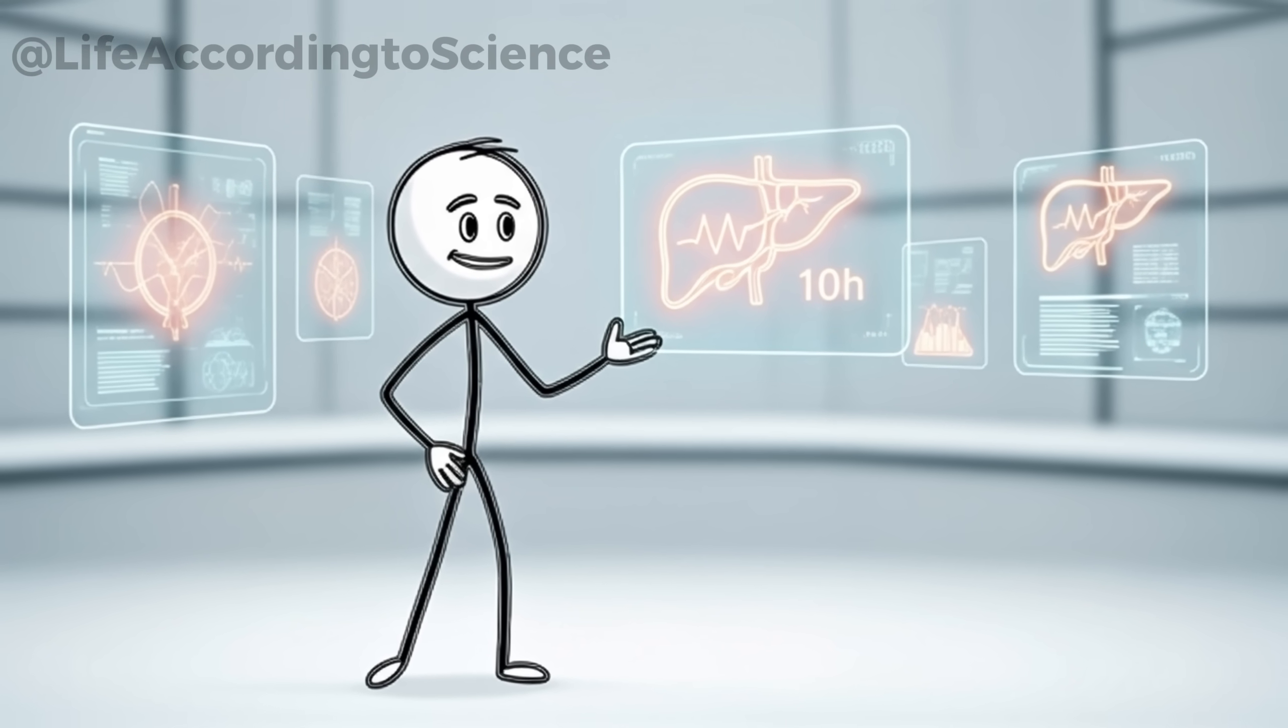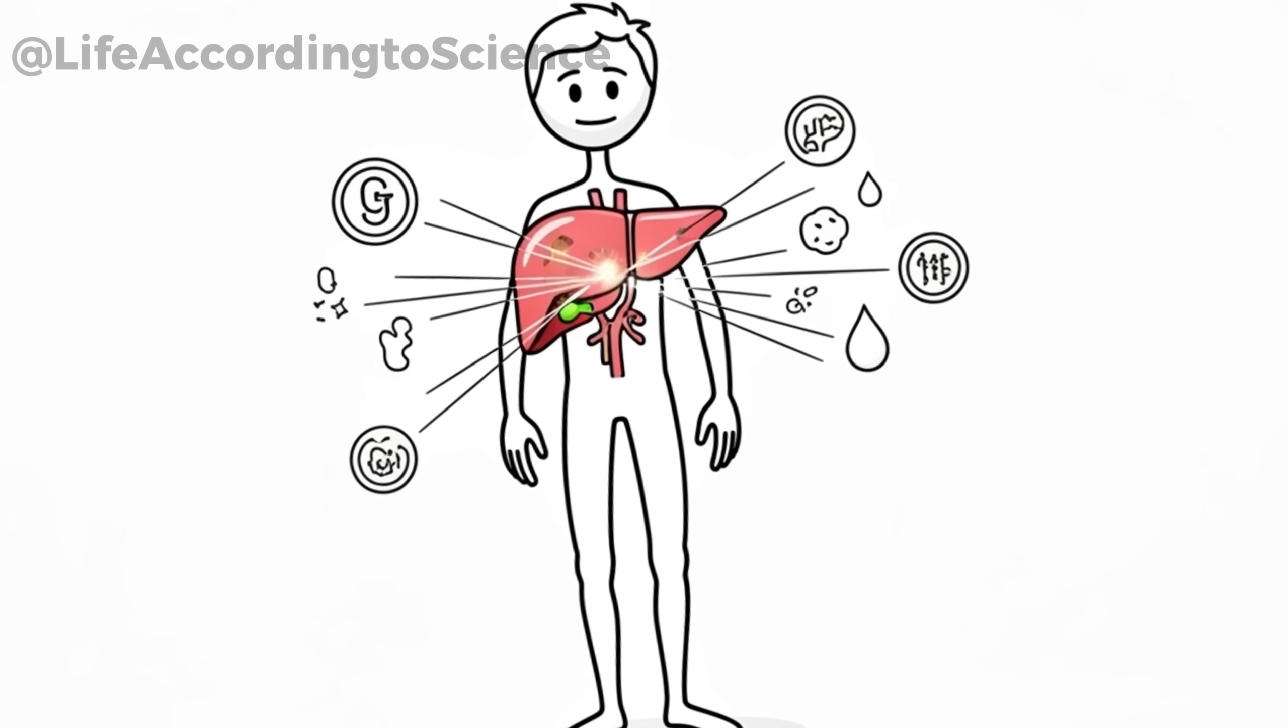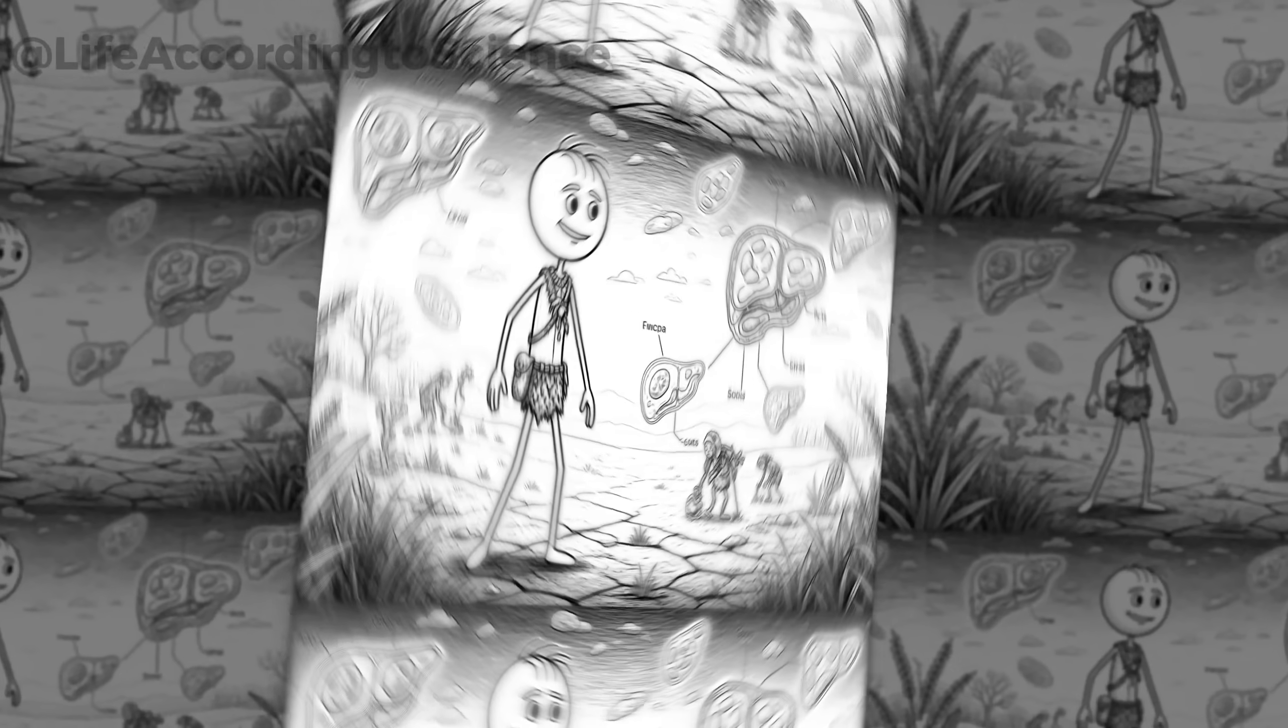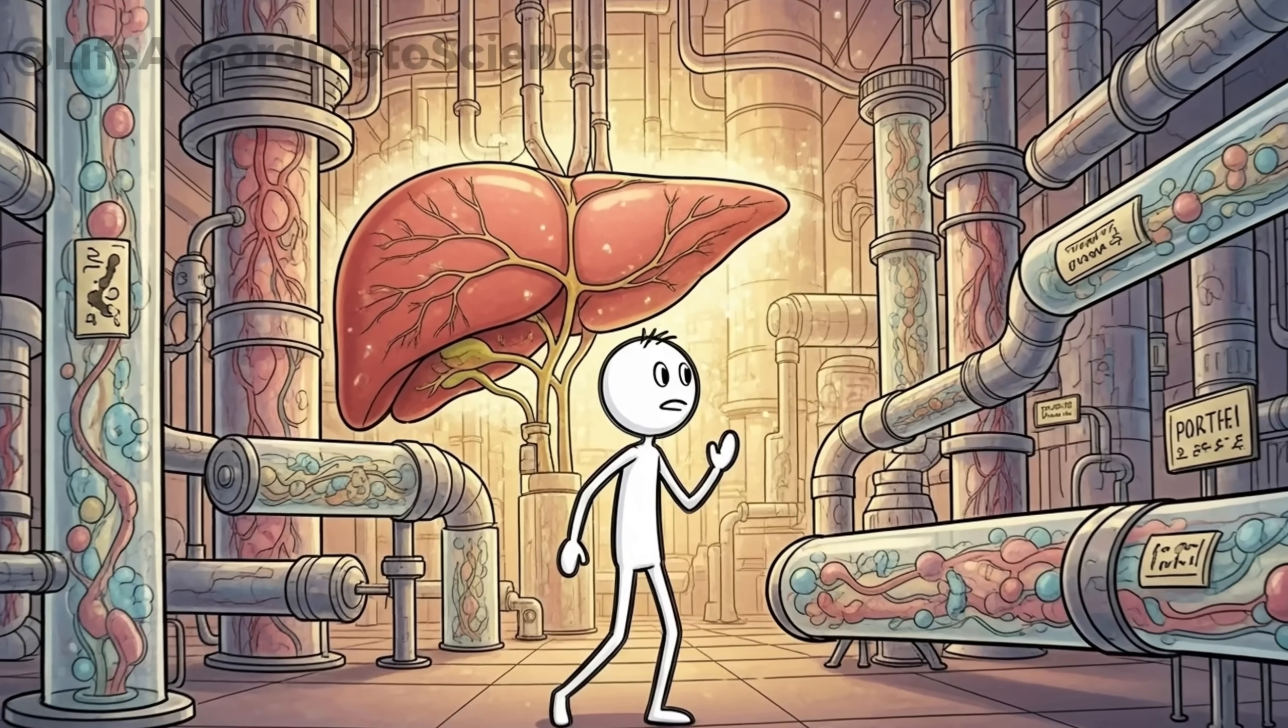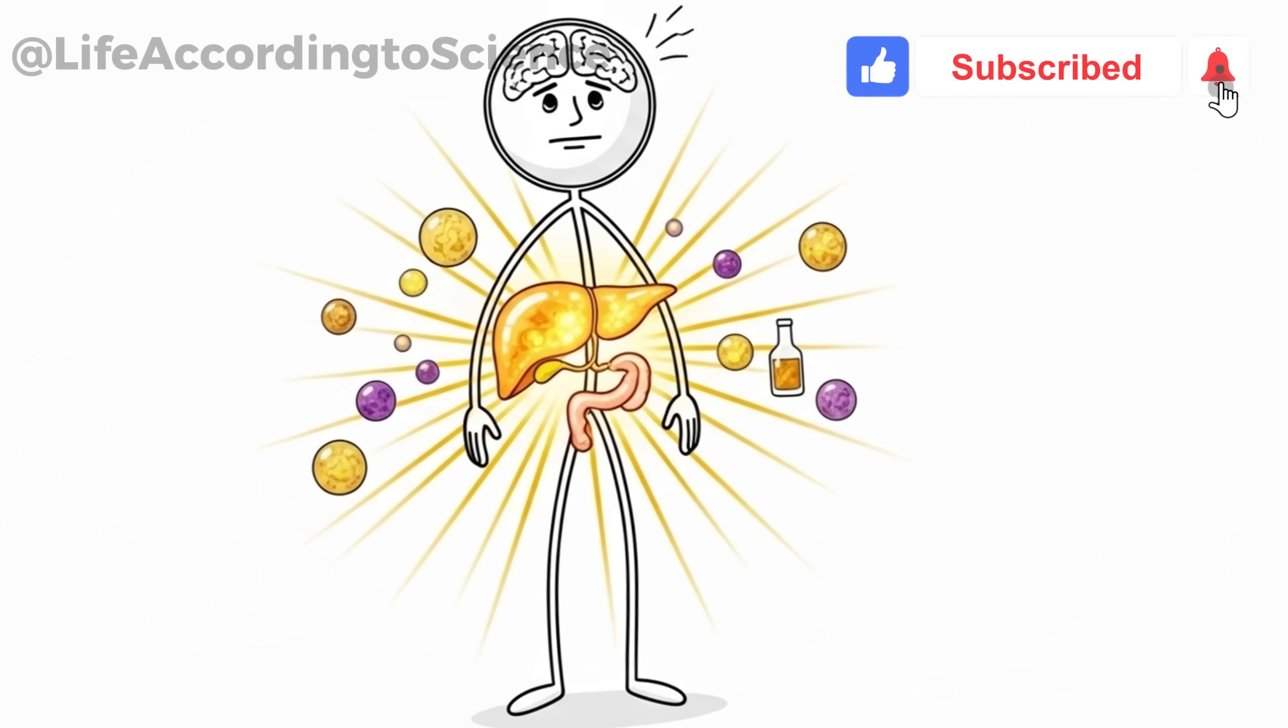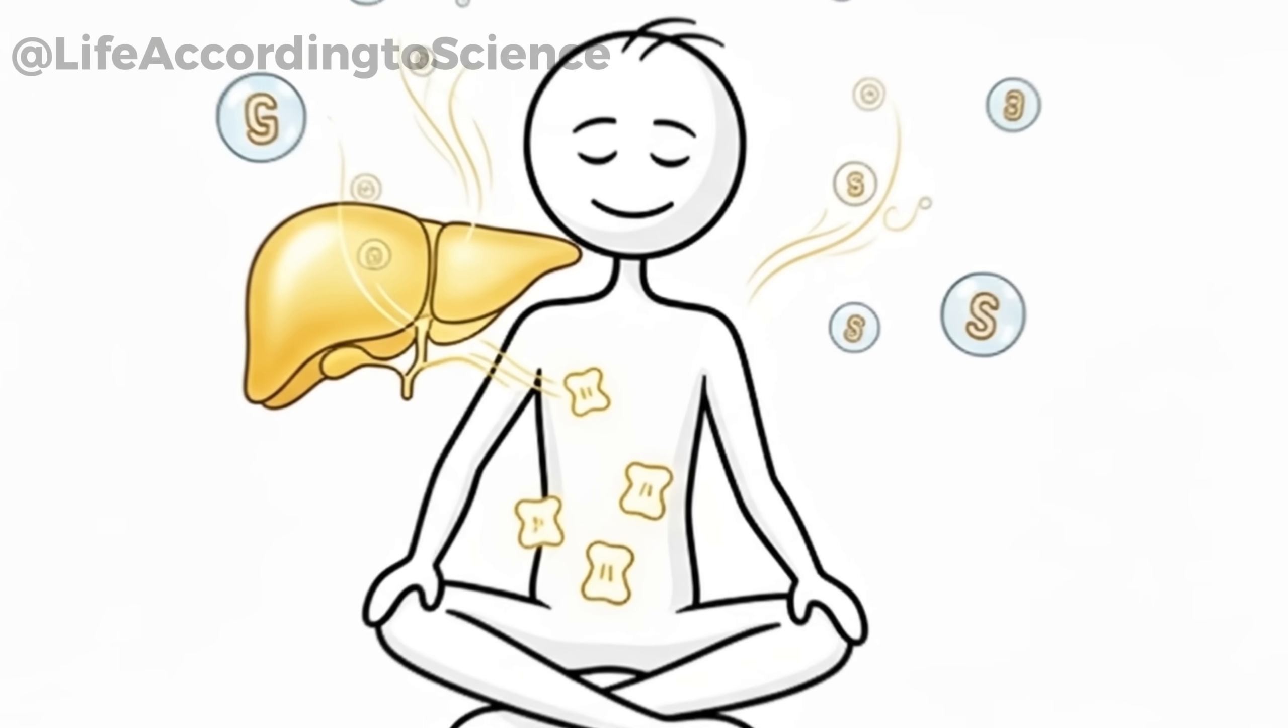By the 10th hour, your liver is working like a hidden hero. It not only regulates blood sugar by releasing glycogen, but also begins preparing for the next step—breaking down fat. This metabolic flexibility is crucial. Without it, humans would never have survived periods of food scarcity. Your liver is essentially a biochemical factory. While most people think of it as the organ that detoxifies alcohol or medication, its fasting role is even more impressive. It provides a steady trickle of energy that keeps your brain running at full speed even when no food enters your body.